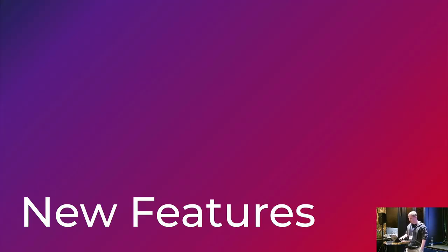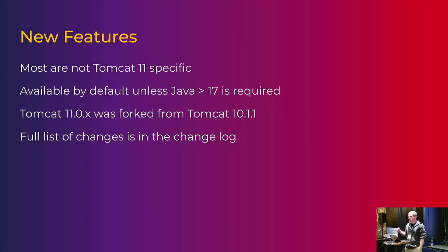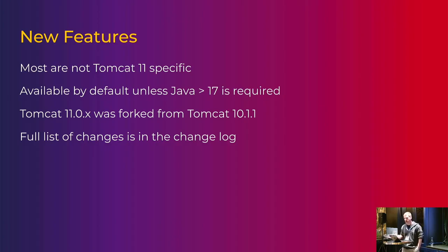Other new features — these aren't necessarily Tomcat 11 specific. Because we tend to backport stuff to earlier versions, this is more a list of new features added to Tomcat since we started working on Tomcat 11. They're generally available by default unless Java above 17 is required, which applies to only one feature. Tomcat 11 was forked from Tomcat 10.1.1, so anything in 10.1.1 and earlier will be in Tomcat 11.